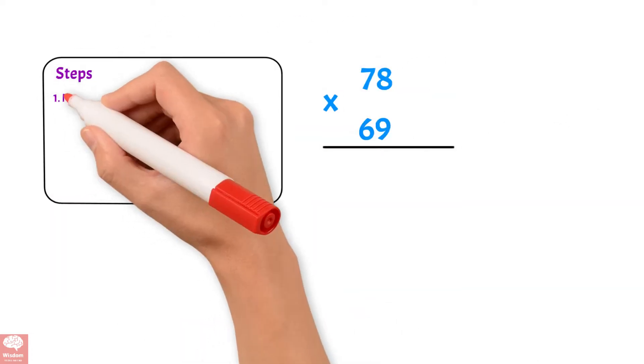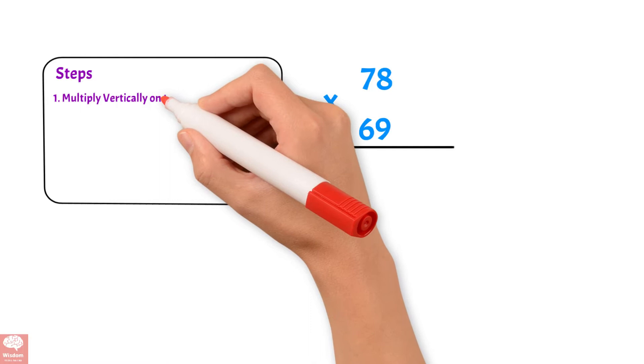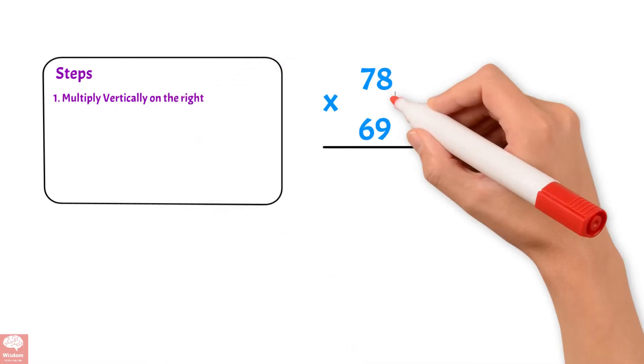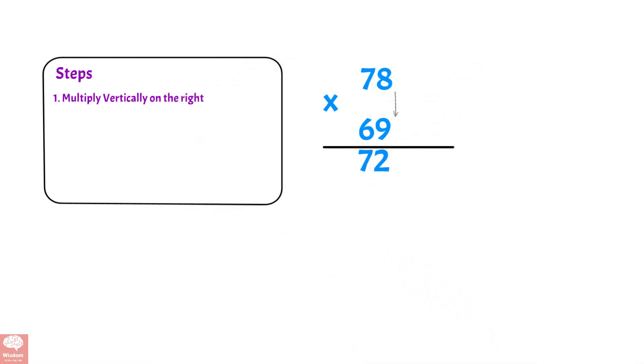Step 1: Multiply vertically on the right. 8 times 9, we get 72.